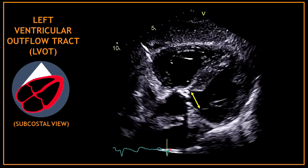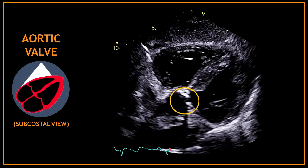If you tilt the probe you can also open the aorta. Once again you can notice that this looks like a horizontal apical five-chamber view. By doing this, you can now visualize the left ventricular outflow tract and you will also be able to assess the aortic valve.